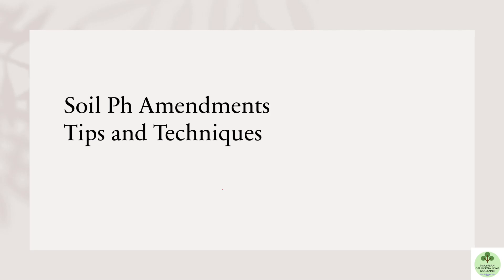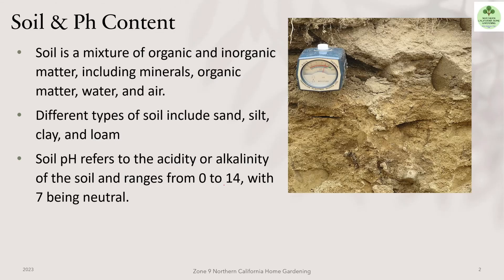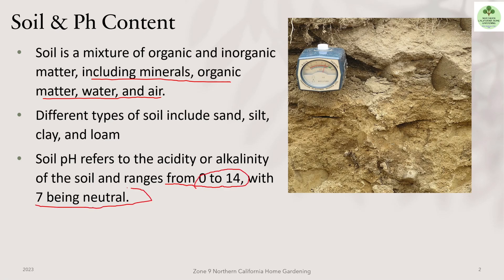How do you amend the alkaline or acidic content of the soil — that's what we're going to cover. So what is soil? Soil is a mixture of organic and inorganic matter, including minerals, organic matter, water, and air. There are different types: sandy soil, silt soil, clay, and loamy soil. Each has its own pH content. The pH range goes from 0 to 14, and 7 is neutral.